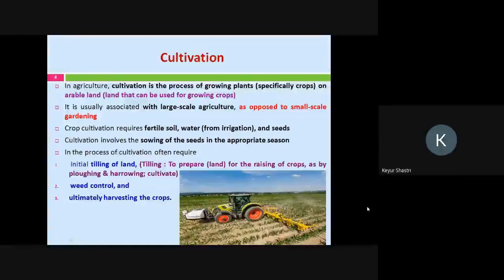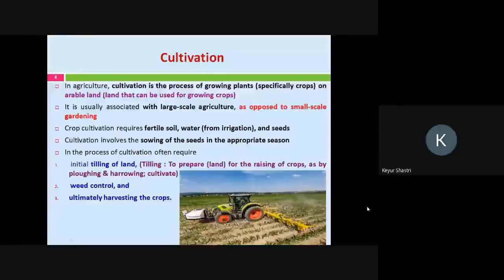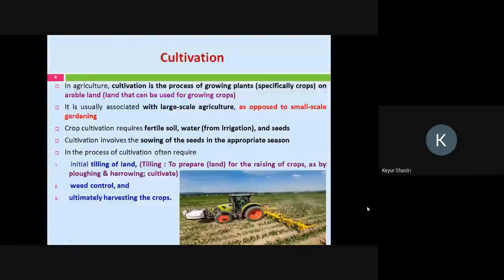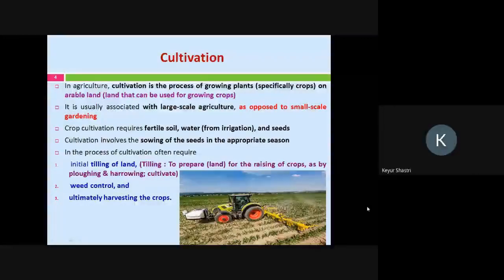You also need to ensure that weeds are not there. Weeds are unwanted plant materials which are not actually part of the crop. They grow additionally along with the actual crop. And ultimately, harvesting the crop — harvesting is nothing but the gathering of a crop. Once the crops are completely grown, we have to collect them by applying the proper technique of harvesting.